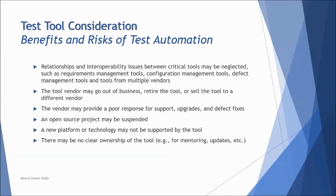An open source project may be suspended — some open source tools can be withdrawn by the vendor, who may announce they will no longer update or modify the tool. You need to be careful about that as well. Also, a new platform or technology may not be supported; for example, with Windows 8 being a failure, some new tools were not supported, and even with Windows 10 some automation tools remain unstable due to inability to support a new platform. There may also be no clear ownership of the tool within the organization — ownership means having one internal person who takes responsibility for the tool and supports the entire organization like an administrator.